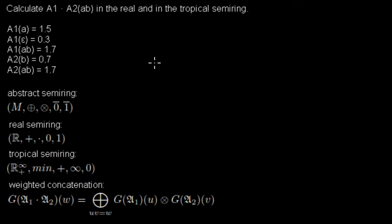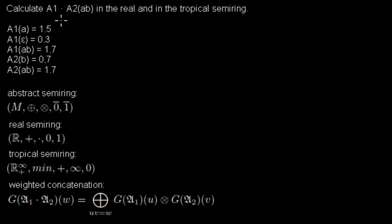In this video I show you how to calculate the weight of AB in the concatenation of the two weighted automata A1 and A2 in both the real and the tropical semi-ring.